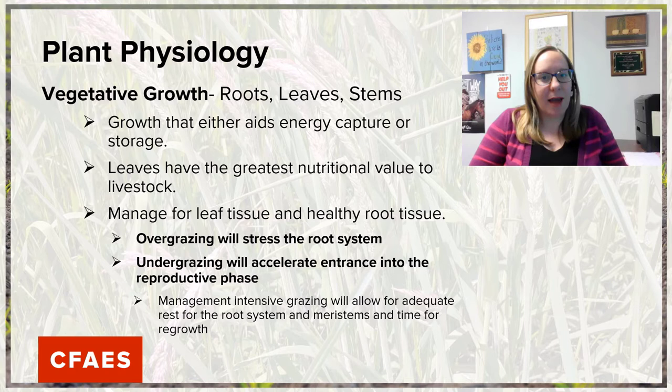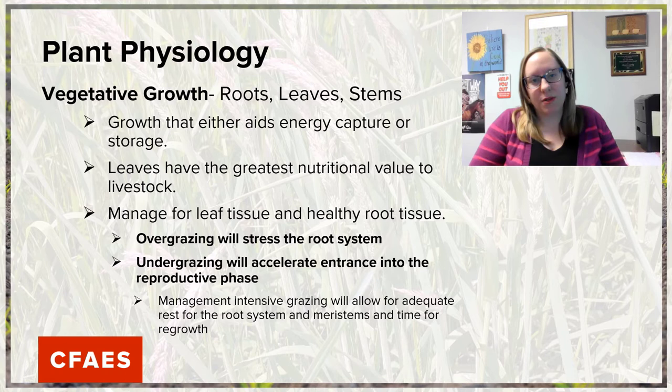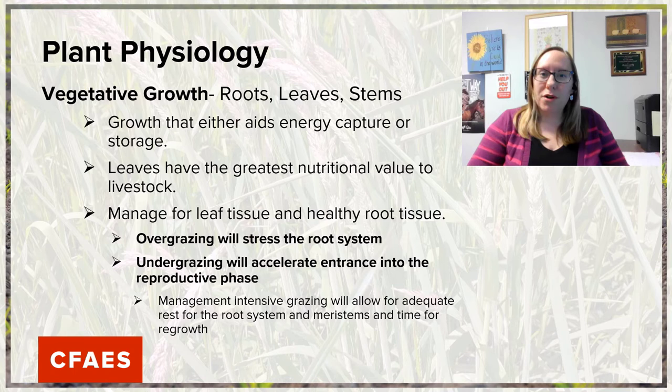Our leaves have the greatest nutritional value to our grazing livestock. When we are looking at vegetative growth, we want to manage for leaf tissue production and healthy root tissue. If we overgraze, we stress the root system — there's not adequate storage of energy in the roots to allow for regrowth. If we undergraze, we accelerate the entrance into the reproductive growth phase, and when plants enter the reproductive phase, forage quality goes down because energy shifts from vegetative to reproductive structures.